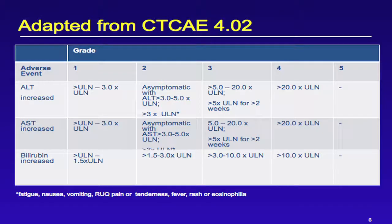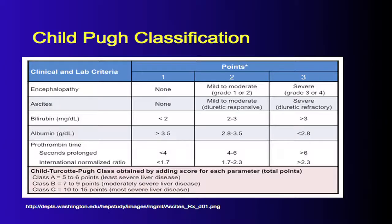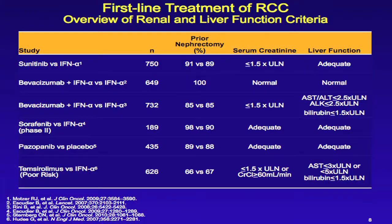This is adapted from the CTCAE for looking at the grades of liver toxicity — ALT, AST, and bilirubin. The Child-Pugh classification is used to get a better understanding of severity of patients' liver disease. This uses clinical and lab criteria such as encephalopathy, ascites, bilirubin, albumin, and prothrombin time. You give points according to the various grades, and then there's class A, class B, and class C, corresponding to least severe, moderately severe, and most severe liver disease.